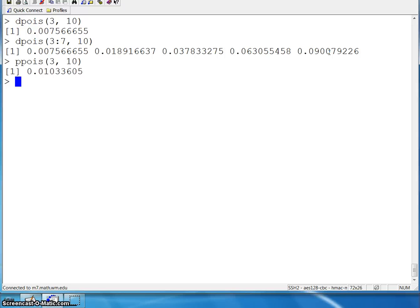Next you can find a quantile of a Poisson random variable. Let's say we want the 99th percentile of a Poisson random variable with a parameter of 10. That would be 18.